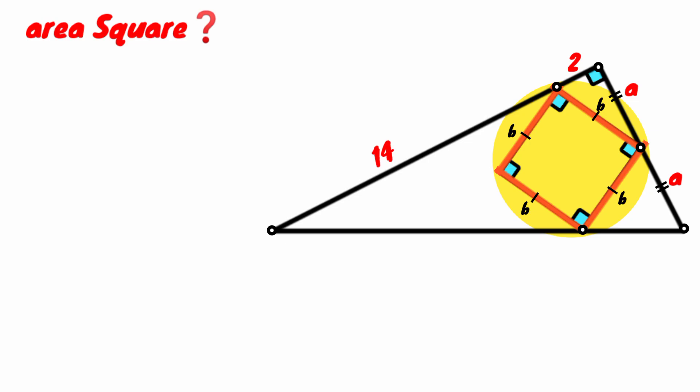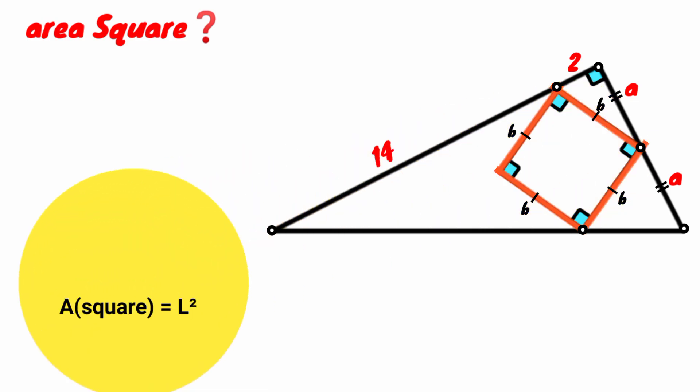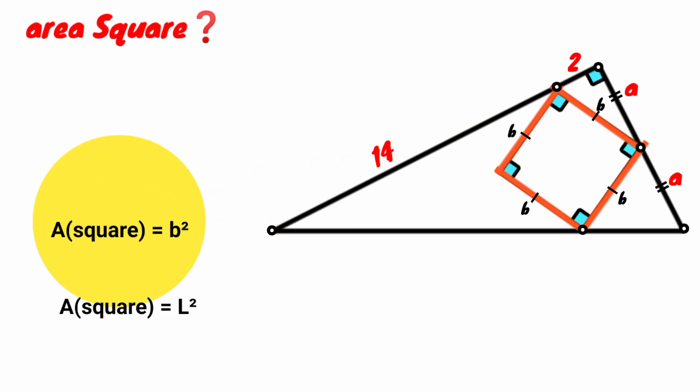The formula for calculating the area of a square is the square of the length of any of its sides. So the square of this gives its area. We write: area of square equals B squared. What is the value of B? We don't know.